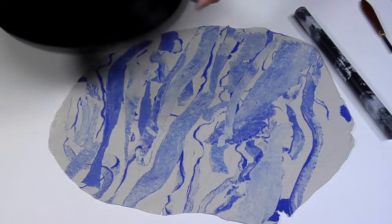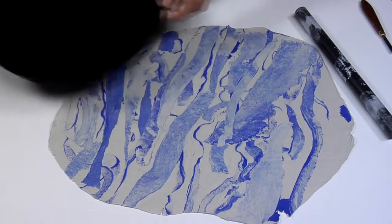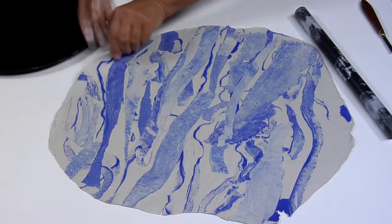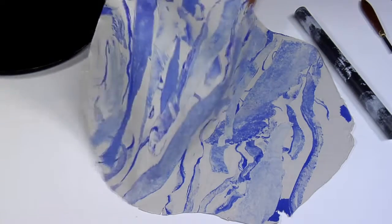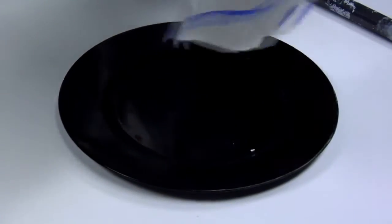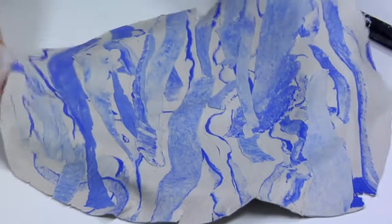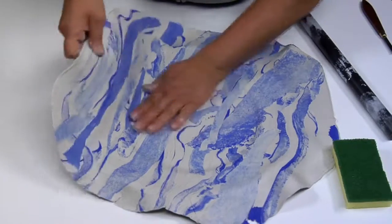Apply a release agent to the plate's surface before spreading the sheet of clay. This will make it easier to remove once dry. Gently place the sheet of clay on the plate using your hands and helping yourself with a slightly damp sponge to make sure that the clay sticks to the plate.